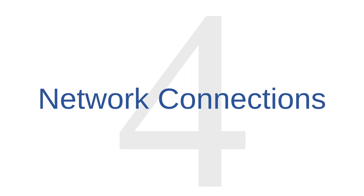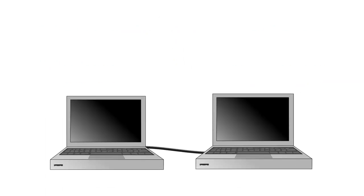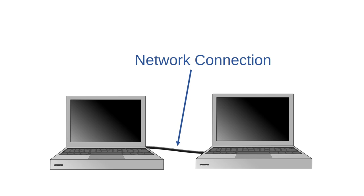Malware source number four is network connections. Some malware don't even need human assistance to reproduce and infect new computers. These malware, usually called worms, distribute themselves across networks without victims having to interact with them at all. Anytime you're connected to a network — either a private network or the public internet — it's possible that your computer could contract a worm from another computer on the network. Some worms spread across the world, infecting millions of internet-connected devices in a matter of days or hours.